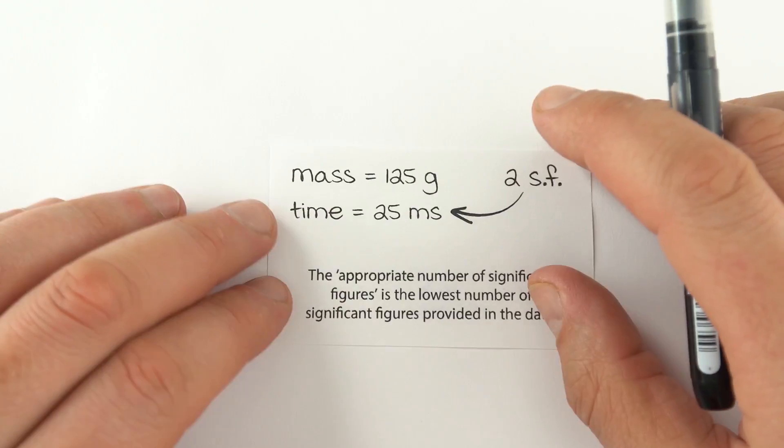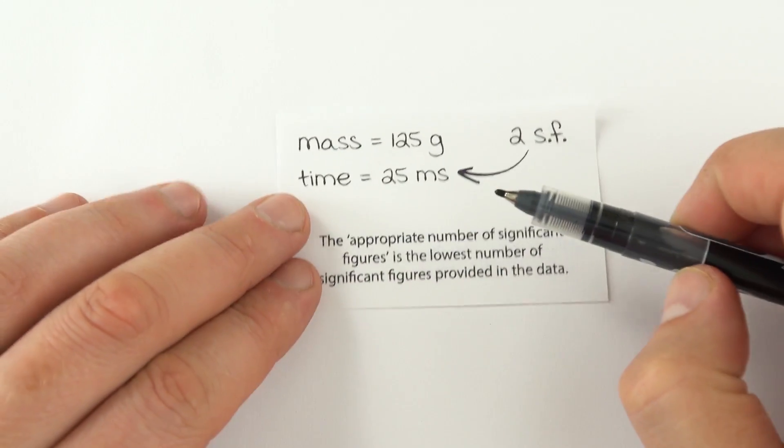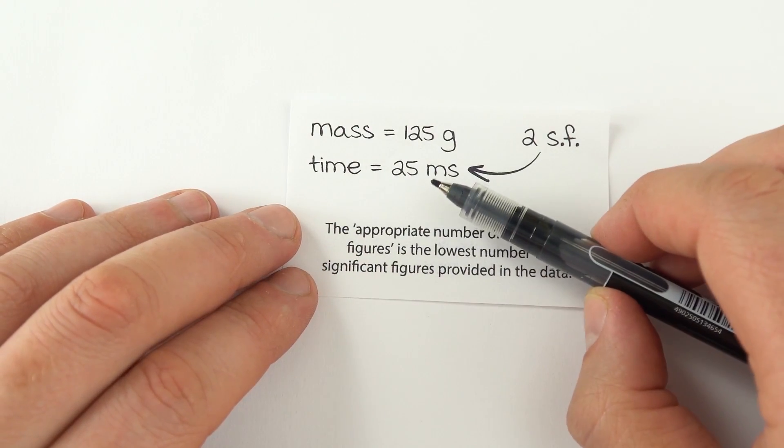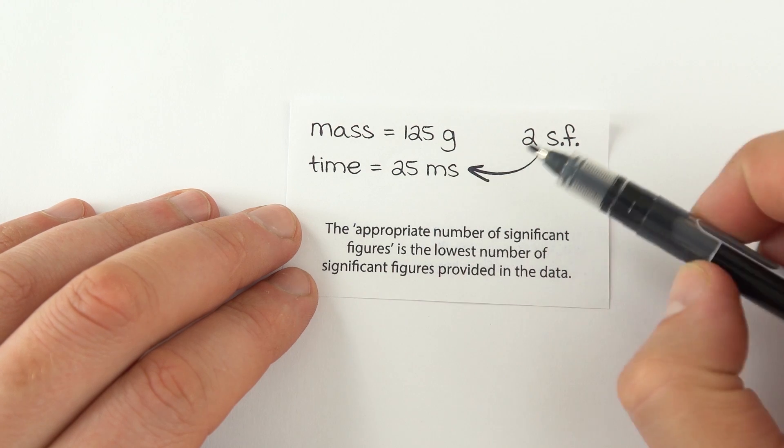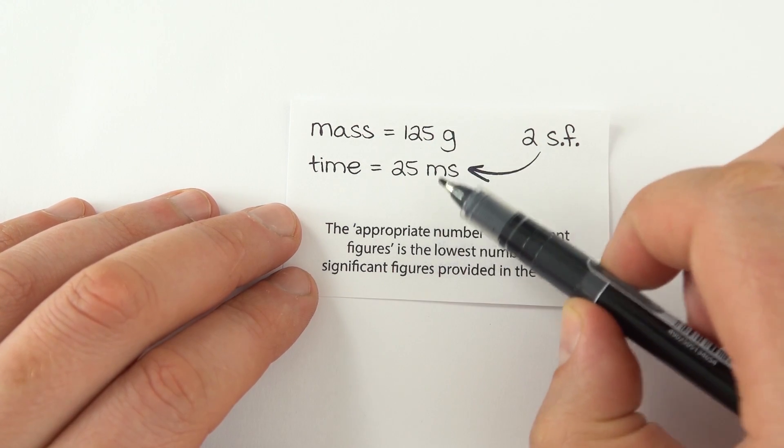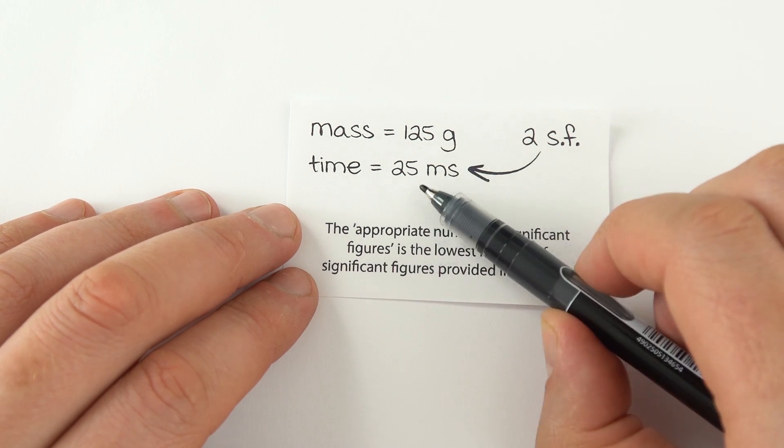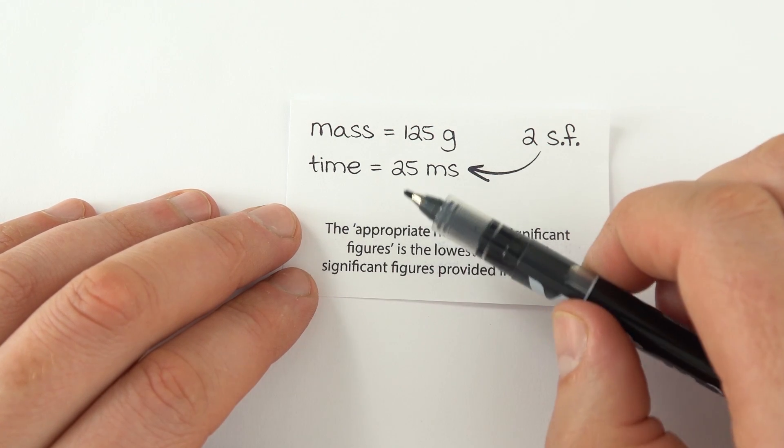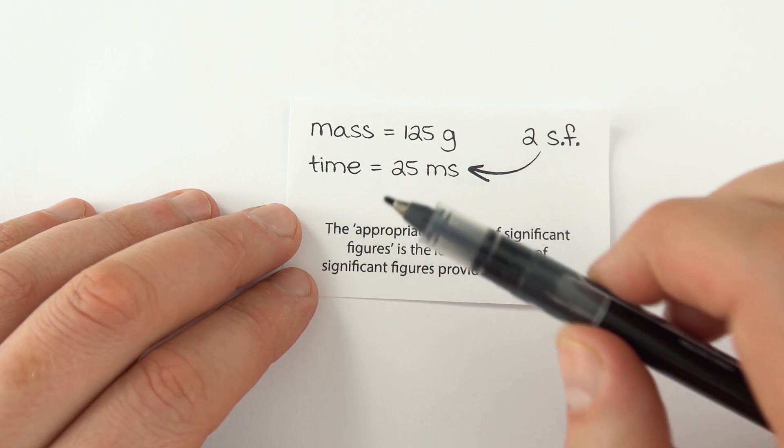The last bit, which is generic for all exams, is make sure that you give your final answer to the least amount of significant figures that's given to you in the question. So if you have something with mass and time, although that's given to three significant figures, you could only justifiably give your final answer to two significant figures. And that's why things like standard form are really important.